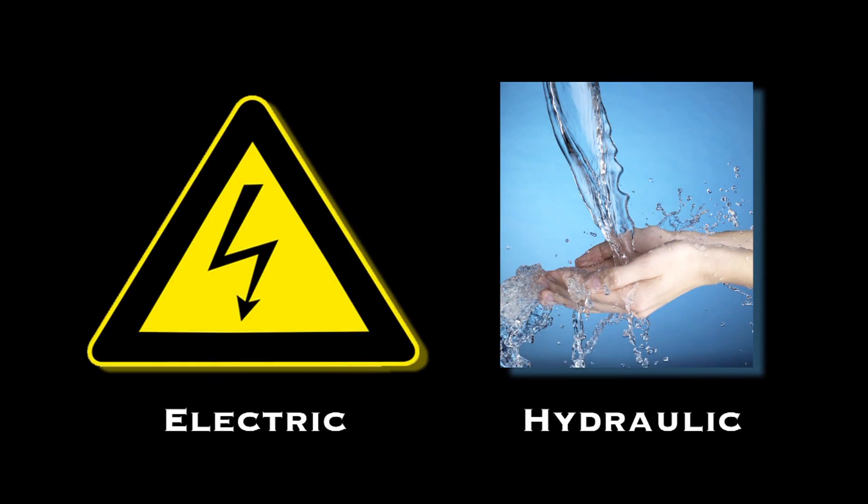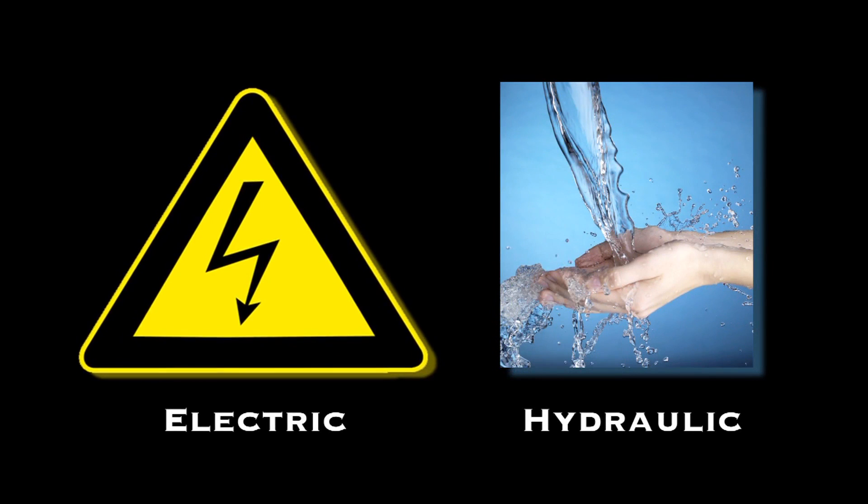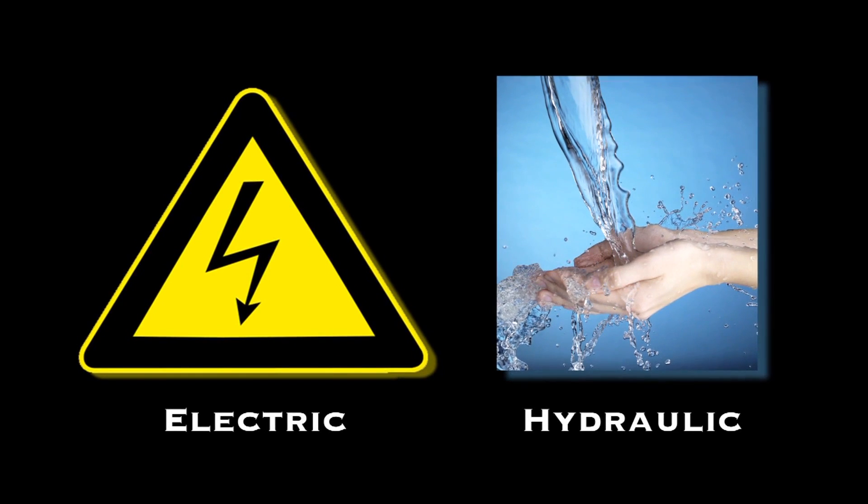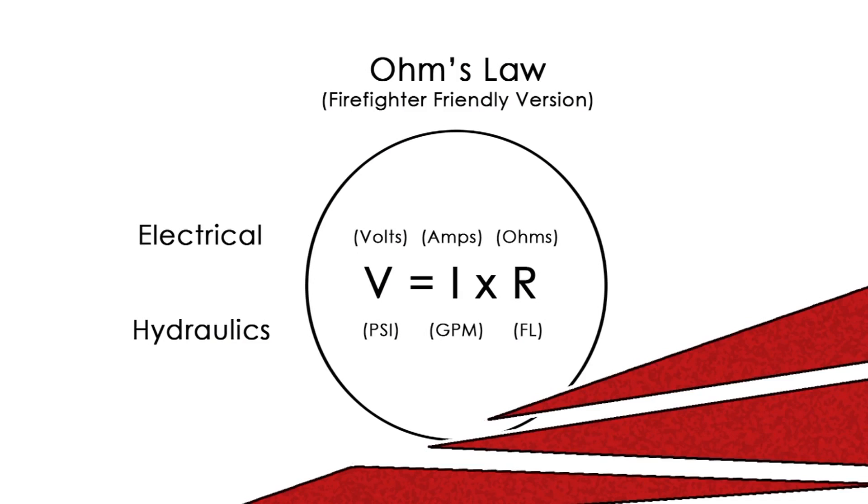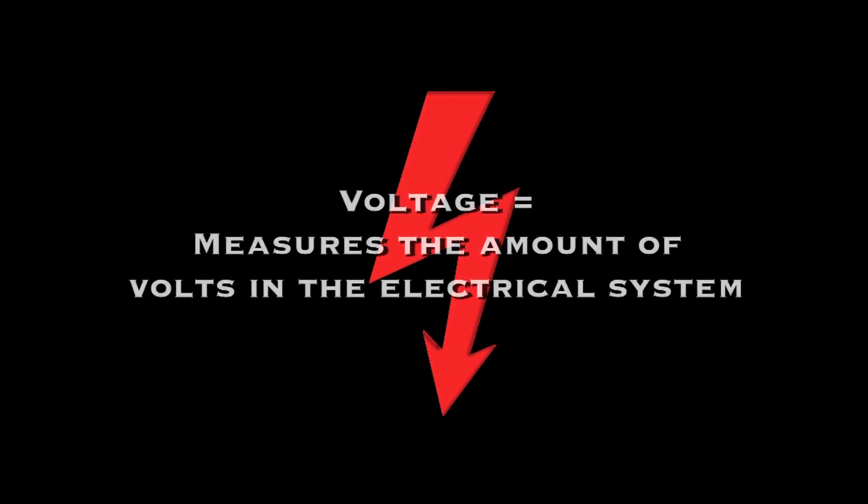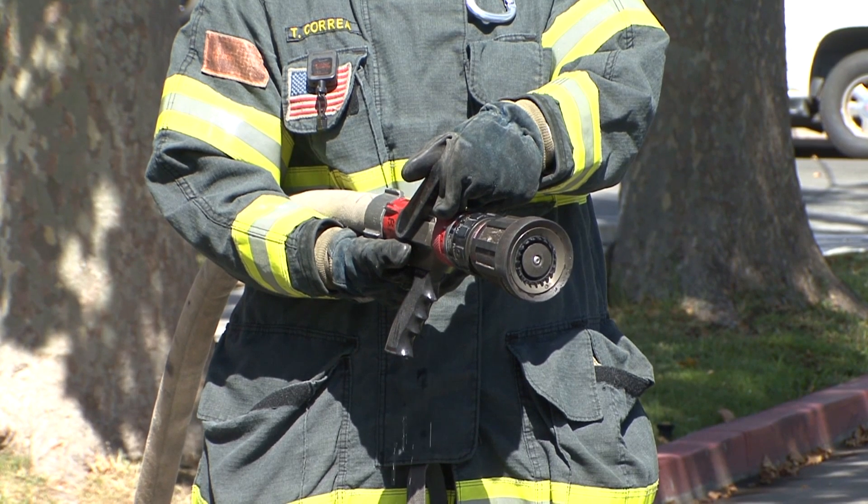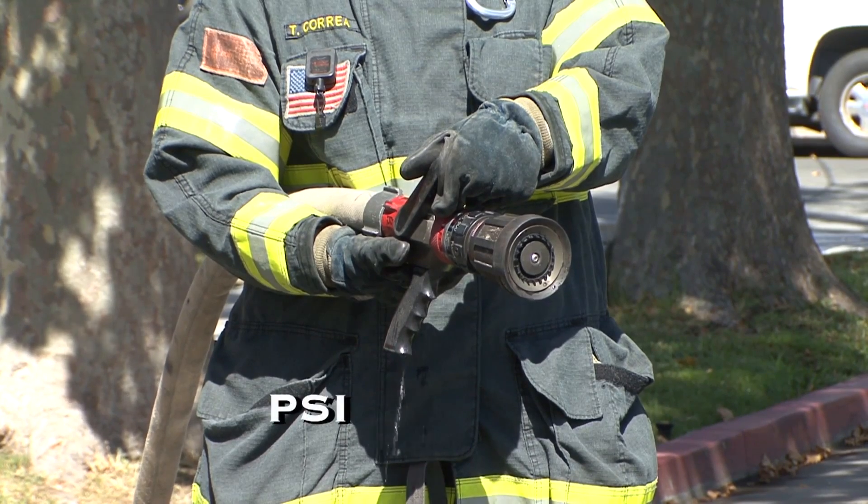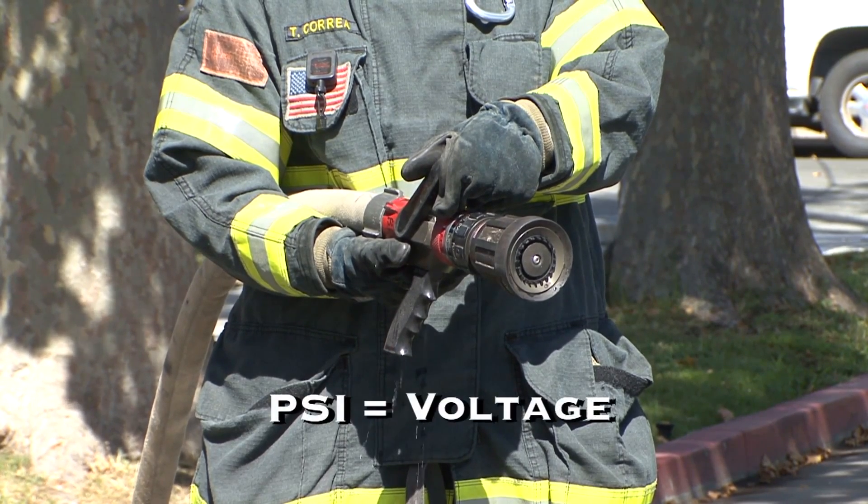All right, today we're going to be talking about how electrical properties can be compared to hydraulic properties, or simply put, Ohm's law in a firefighter friendly fashion. There's three different electrical properties that we're going to compare to water properties. First one is voltage, and that's measuring the amount of volts that are in the electrical system. Or in our case, what's the pressure in the hose line? PSI. So PSI equals voltage.